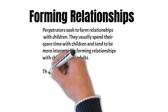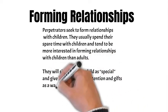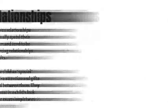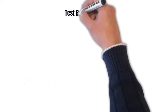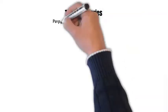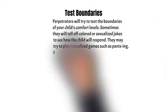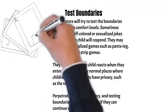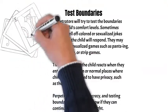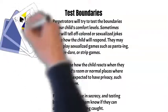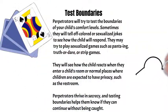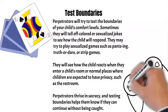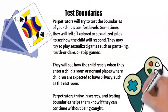Two, they will start to test boundaries. Predators will try to test boundaries of your child's comfort level. Sometimes they will tell off-colored and sexual jokes to see how the child will respond. They may try to play sexualized games such as petting, truth or dare, or strip games. They will take note on how the child reacts when they enter the child's room or normal places where children are expected to have privacy such as the restroom. Predators thrive in secrecy and testing boundaries. This helps them know if they can continue on without being caught.